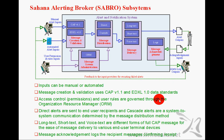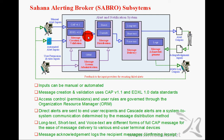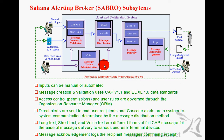The Sahana alerting broker system consists of five subsystems. Message creation is done manually or through an automated process, then validated through CAP version 1.1 and the Emergency Data Exchange Language (EDXL) version 1.0. The message can then be disseminated directly to end recipients or via cascade distribution — for example, transmitting to the health department which shares it with airport authorities, who redistribute it to their own recipient list. This is managed through the organizational resource manager.